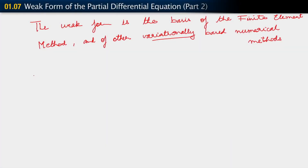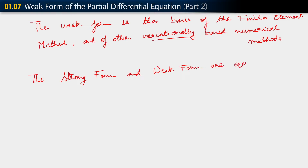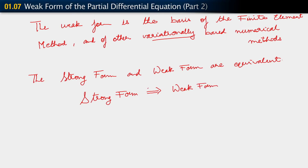The very first thing I'm going to do is demonstrate to you the equivalence between the strong form and the weak form. The claim is that the strong form and weak form are equivalent. What that means is that one implies the other. The strong form implies the weak form, and importantly, the weak form implies the strong form.